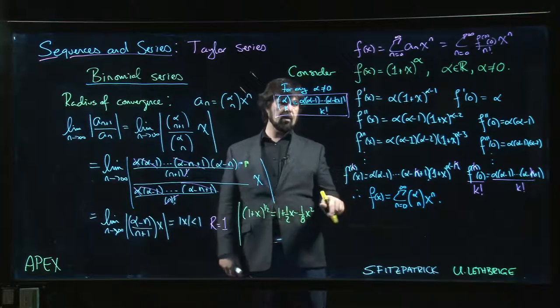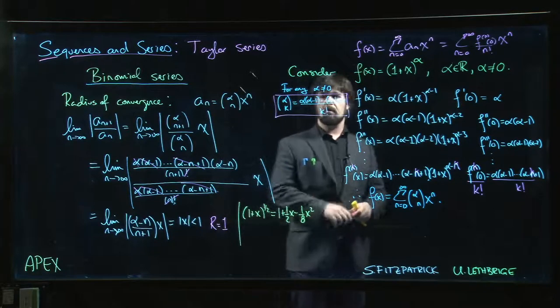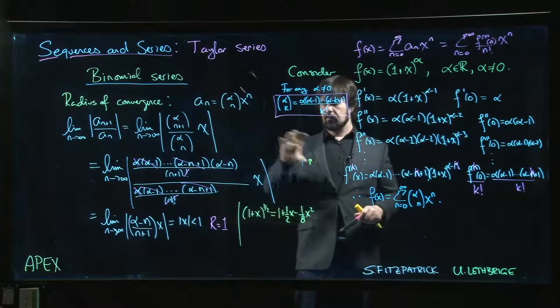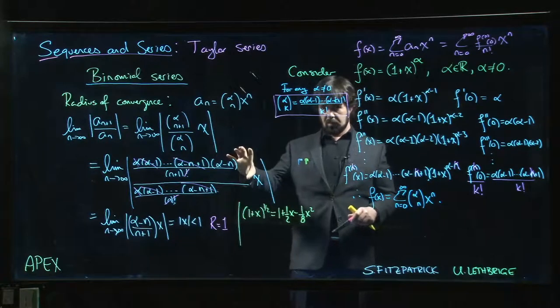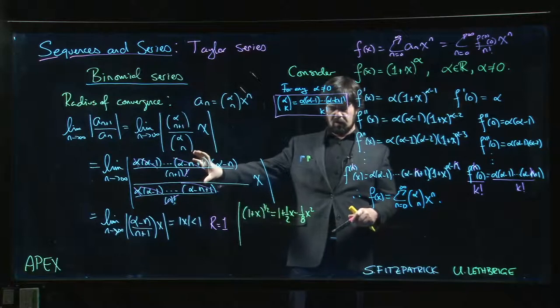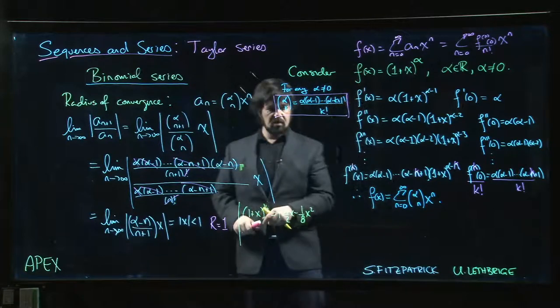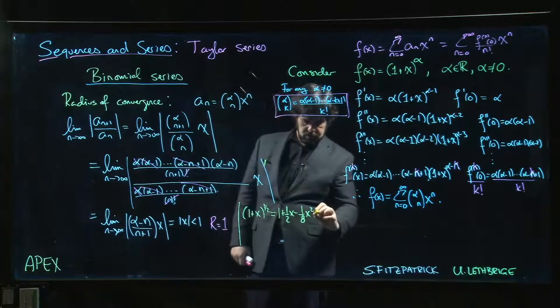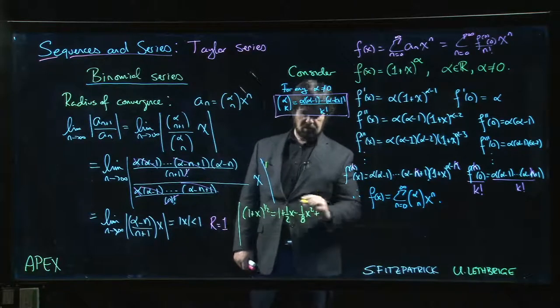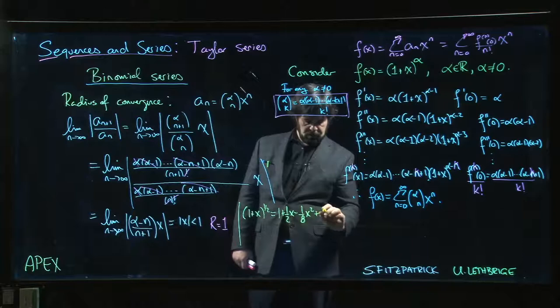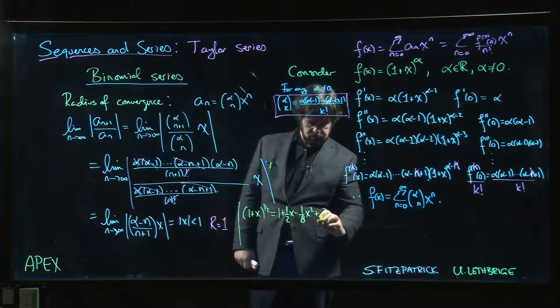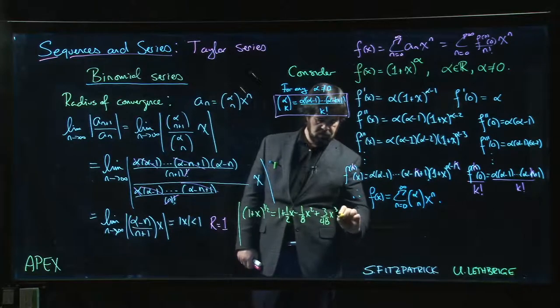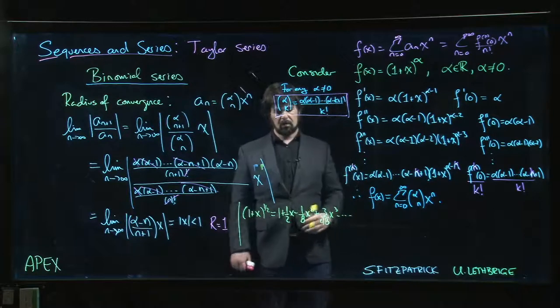If we wanted to go to the next one, we could. Alpha minus 2 is going to be -3/2. So we have (-3/2) times (-1/2) times (1/2). So we're at -3/8. We also have to divide by the 3 factorial. So we get - actually double negative - so we get 3/48 x cubed and so on.